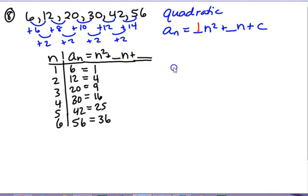I know that's n squared plus something. So 1 plus what equals 6? 1 plus 5. 4 plus 8 equals 12. 9 plus 11 equals 20. 16 plus 14 equals 30. 25 plus 17 equals 42. And 36 plus 20 equals 56. So now I'm looking at this pattern of numbers. This pattern of numbers is going to finish my rule.